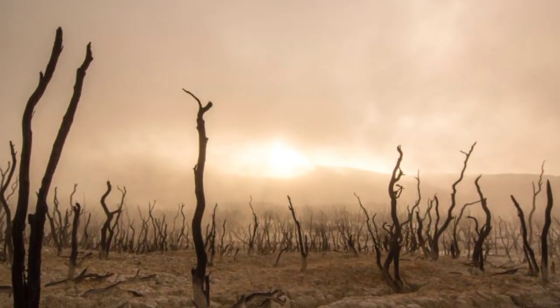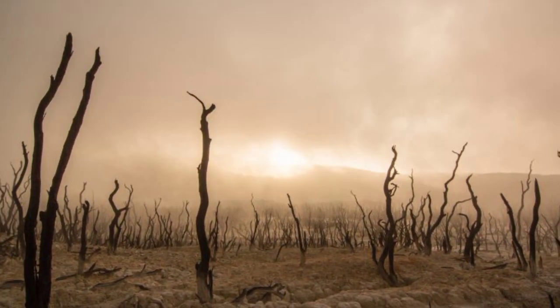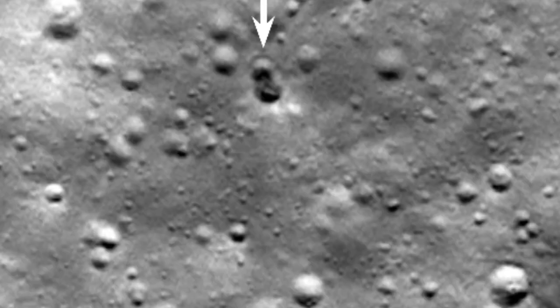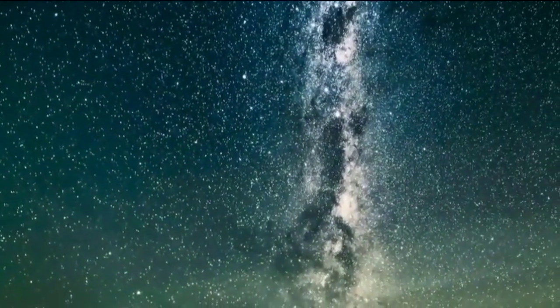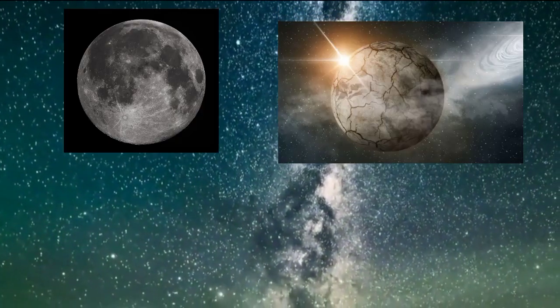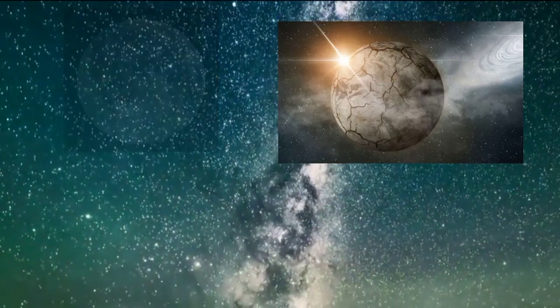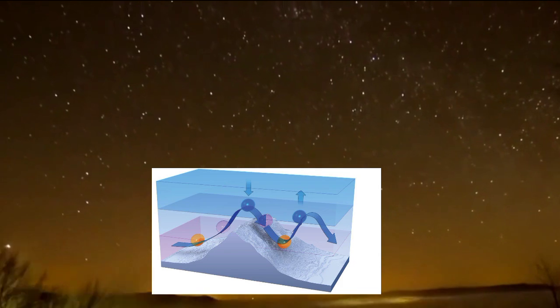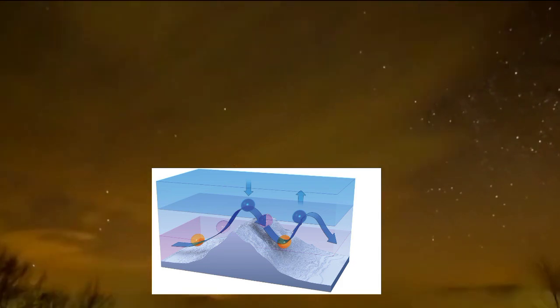Mercury is a dead planet and the most heavily cratered object in the solar system. It is a world of black starry skies, grey craters, no moon, and not enough gravity to hold an atmosphere. Without an atmosphere, Mercury is a silent world without any sound.